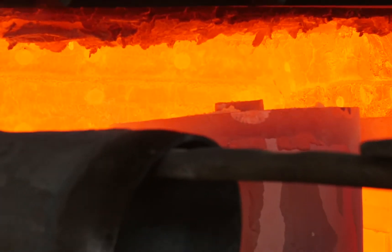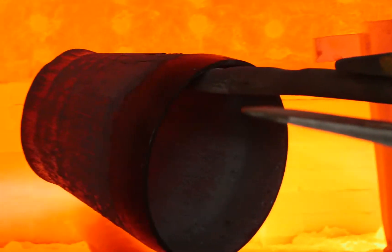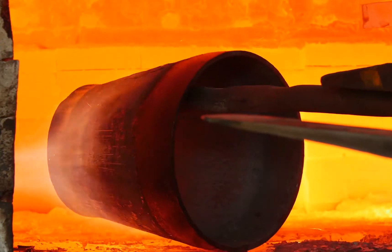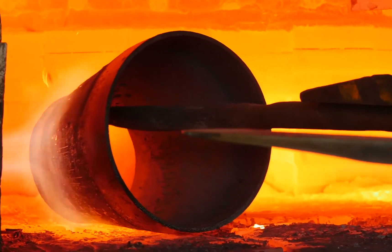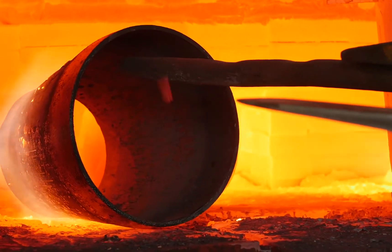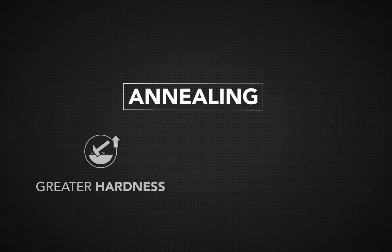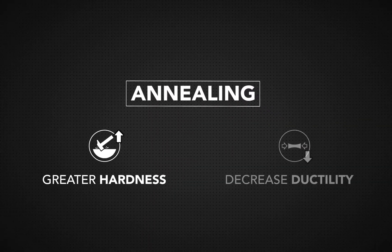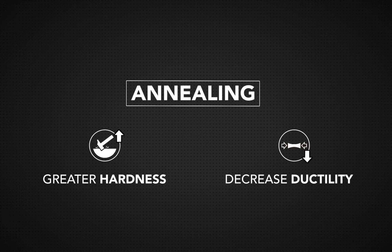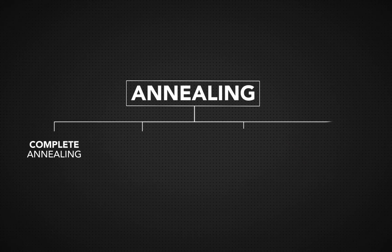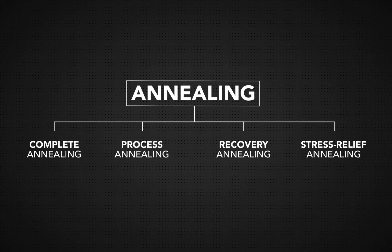Manufacturers use different types of annealing to achieve greater hardness and decrease ductility. Annealing is an umbrella term for a few different processes a metal can be put through, but all annealing processes have some basic similarities.